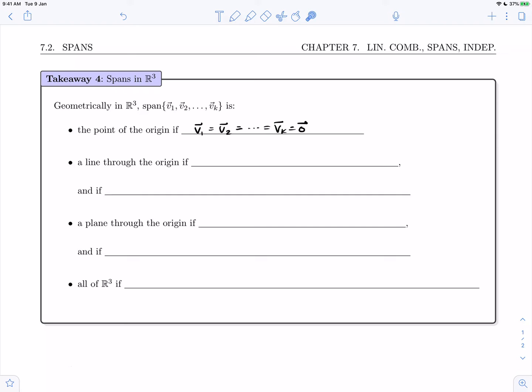The span of a collection of vectors v1 through vk is a line through the origin if the generating vectors are all parallel. Now that's not quite enough because the 0 vector, as we know, is parallel to all vectors, so we need at least one generator.